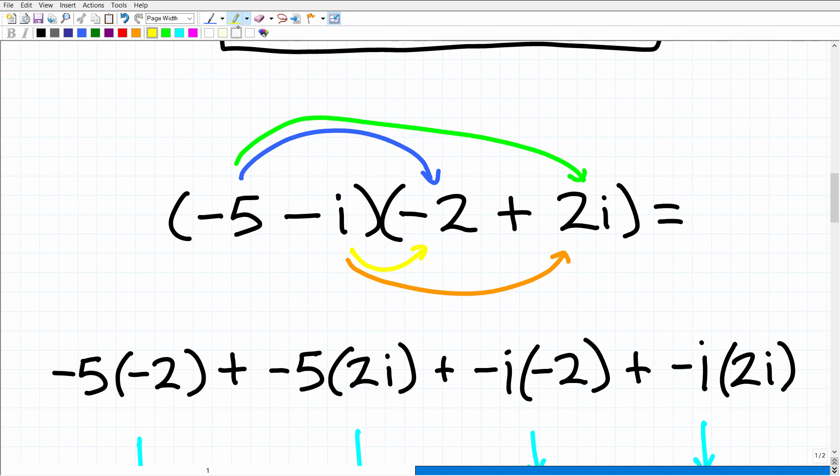Let's go ahead and actually do this then. So we have negative five times negative two. We'll just write this right here for now. Then we're going to go negative five times positive 2i is going to be negative 10i. We'll write that there. And then the inner is going to be negative i times negative two. We'll write that here. And then we have negative i times 2i.